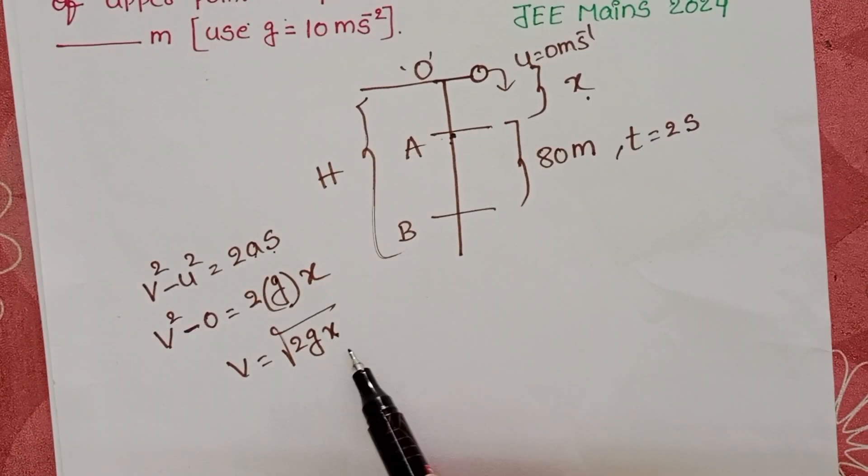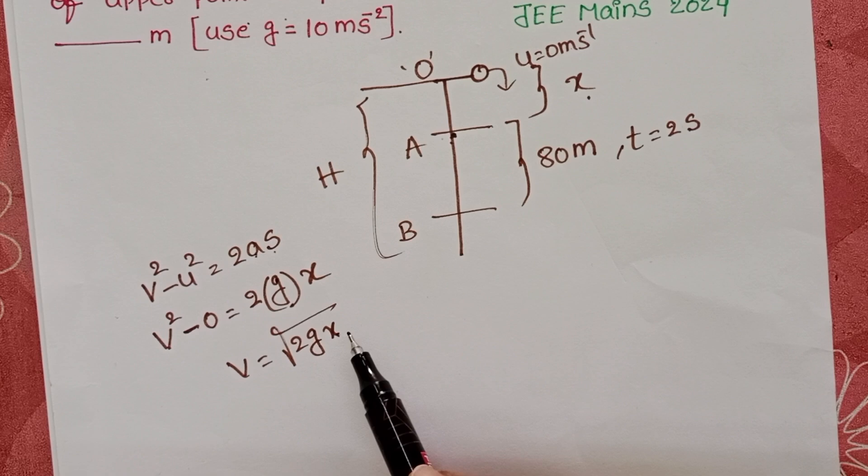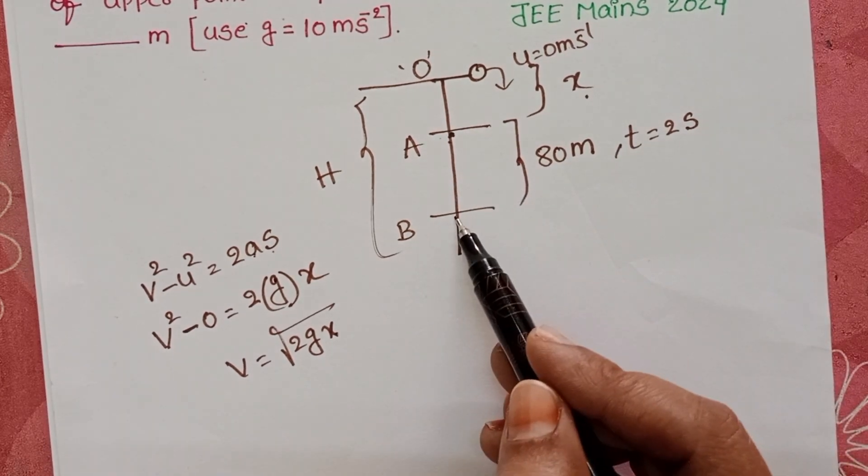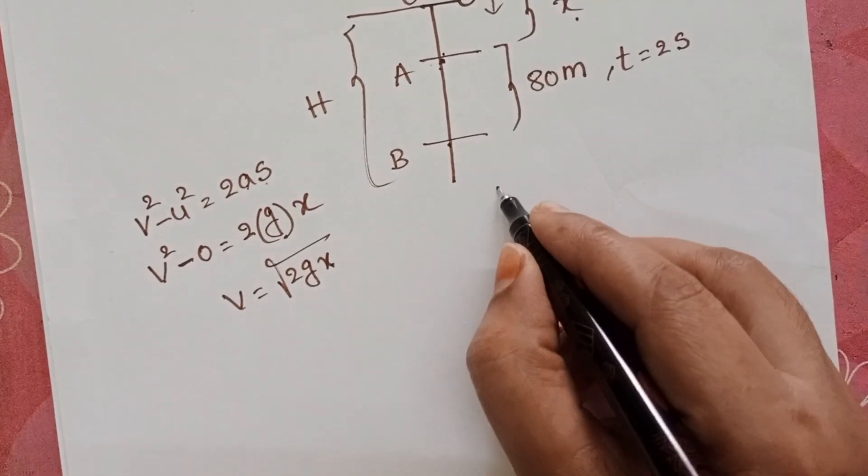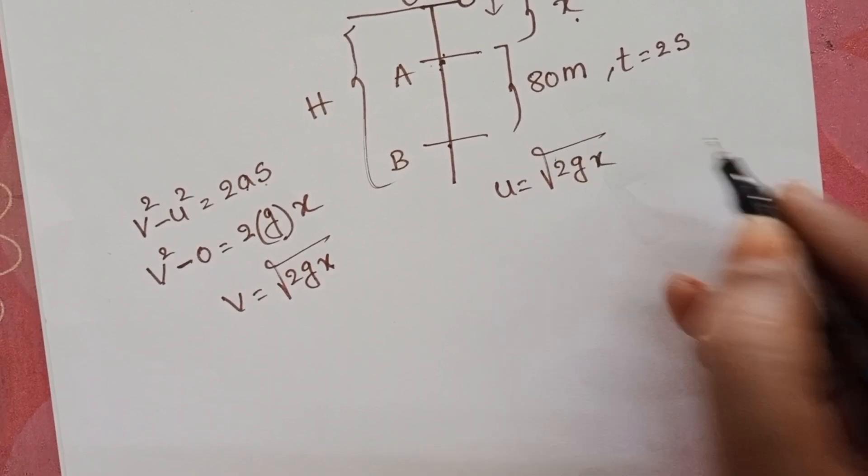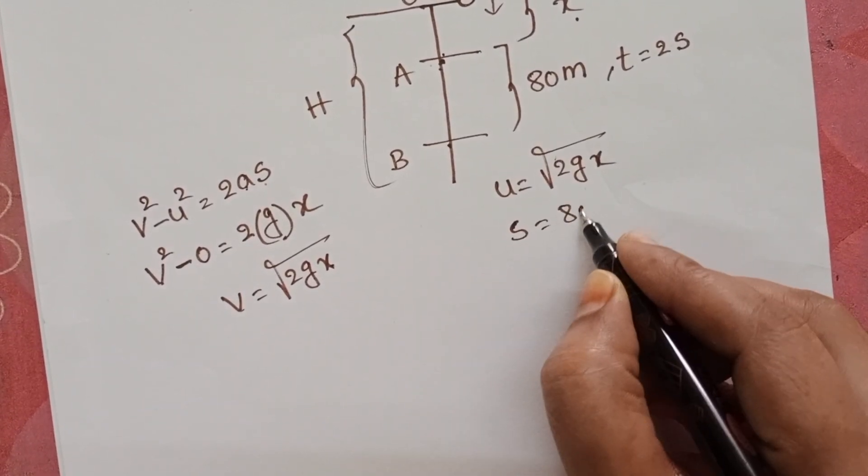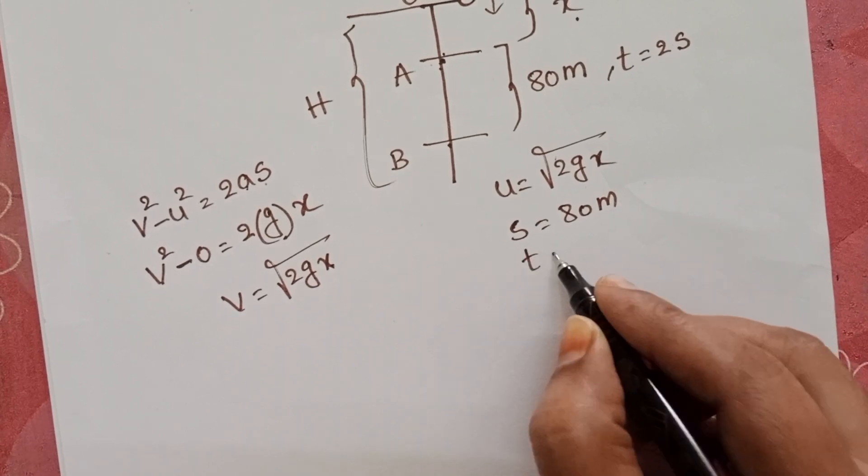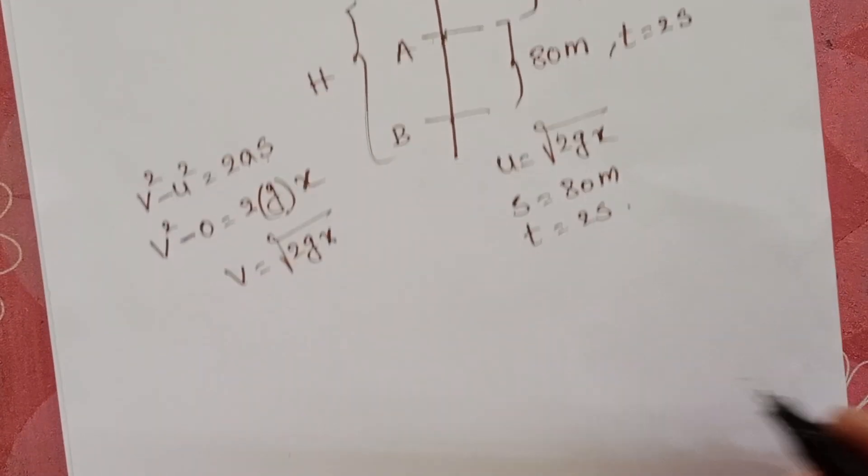At point A, this velocity becomes the initial velocity to reach point B. At A point, initial velocity is square root of 2GX, distance equals 80 meters, and time equals 2 seconds.